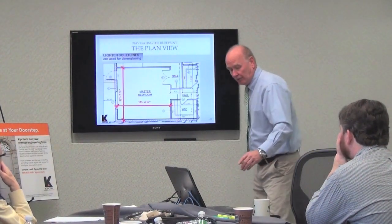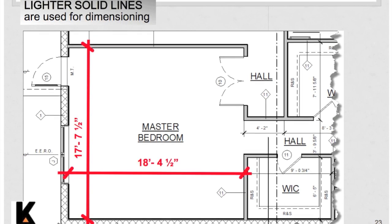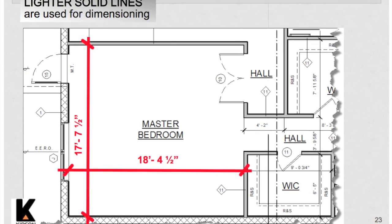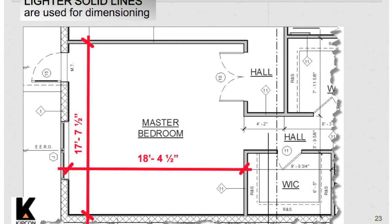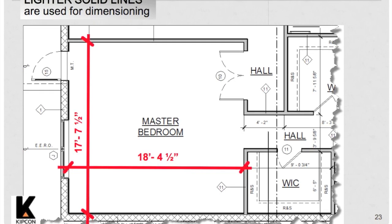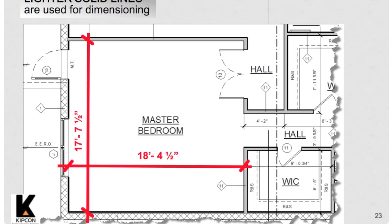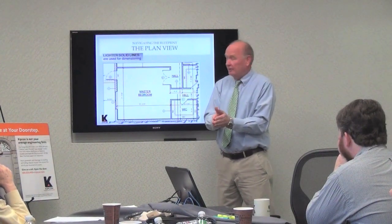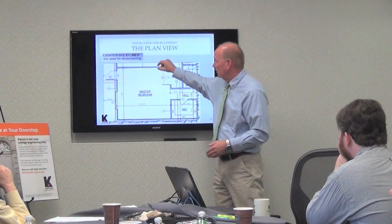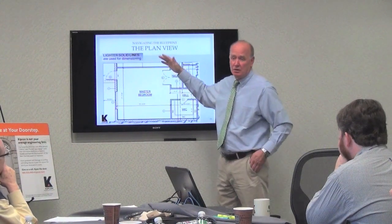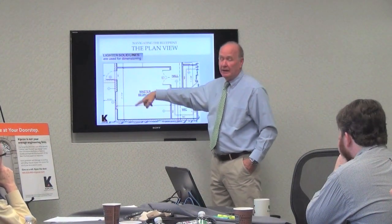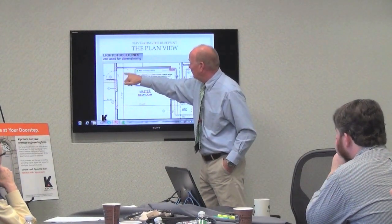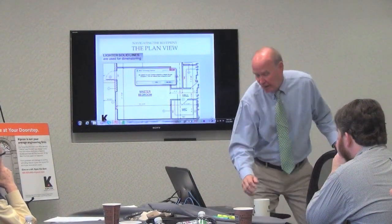You can see that this room is 18 feet 4½ inches by 17 feet 7½ inches. If you're doing the work or measuring, you need to know whether the dimensions are from the inside of the wall or the outside of the wall, because that makes a difference. If you have a six-inch wall, that's going to add a whole foot to the dimension of the building if you didn't lay it out correctly. The hash mark shown here indicates this dimension is from the inside of the wall.